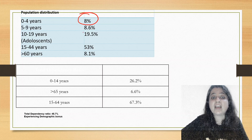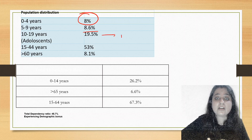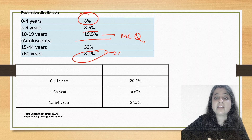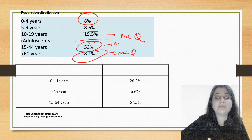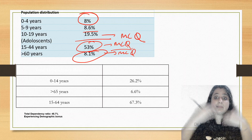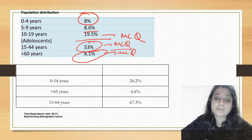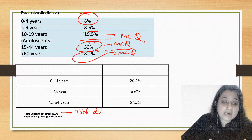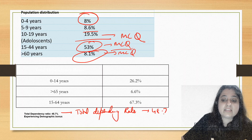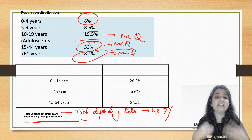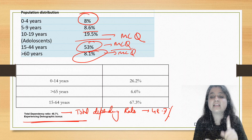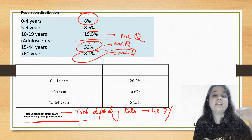Regarding population distribution in India: the 0–4 years age group is 8%, 5–9 years is 8.6%, adolescents are 19.5%, and the elderly are 8.1%. Females in the reproductive age group exceed 50%. The total dependency ratio is 48.7%, and India is currently experiencing a demographic bonus with a decline in fertility.